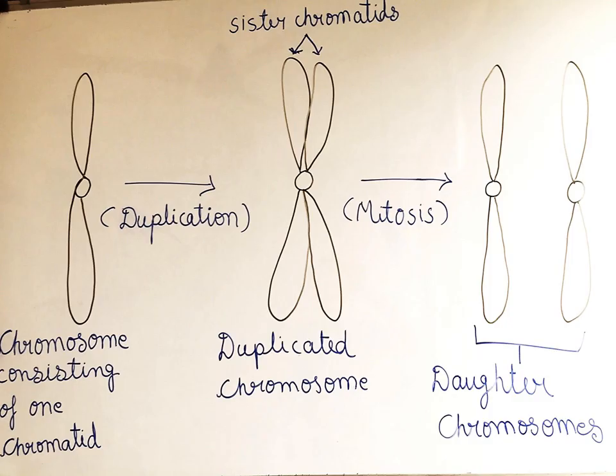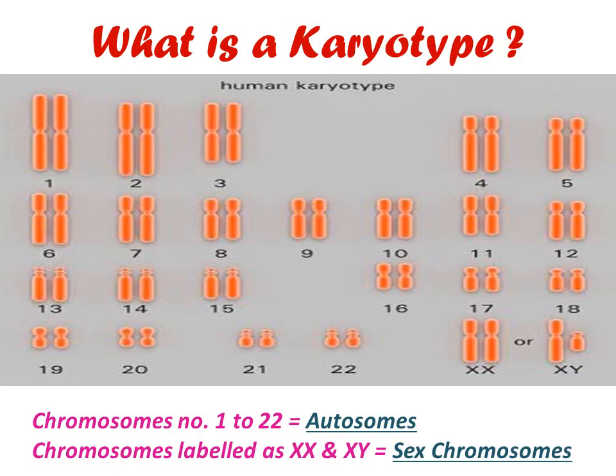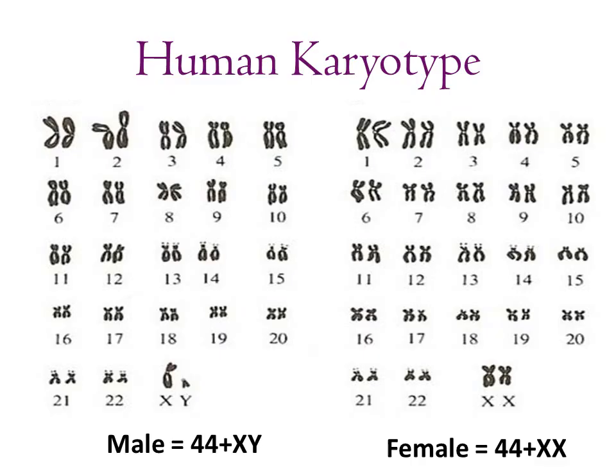The centromere is required for chromatid separation late in mitosis. The number, size and shape of metaphase chromosomes constitute the karyotype, which is distinctive for each species. In most organisms, all cells have the same karyotype.